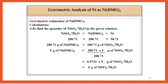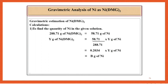Which is equal to 0.9723 times y gram nickel sulfate, equal to z gram of nickel sulfate. To find the quantity of nickel in the given solution: 288.71 gram of nickel DMG corresponds to 58.71 gram of nickel. So y gram of nickel DMG corresponds to 58.71 divided by 288.71 multiplied by y gram of nickel. Therefore 0.2034 times y gram of nickel is equal to b gram of nickel.